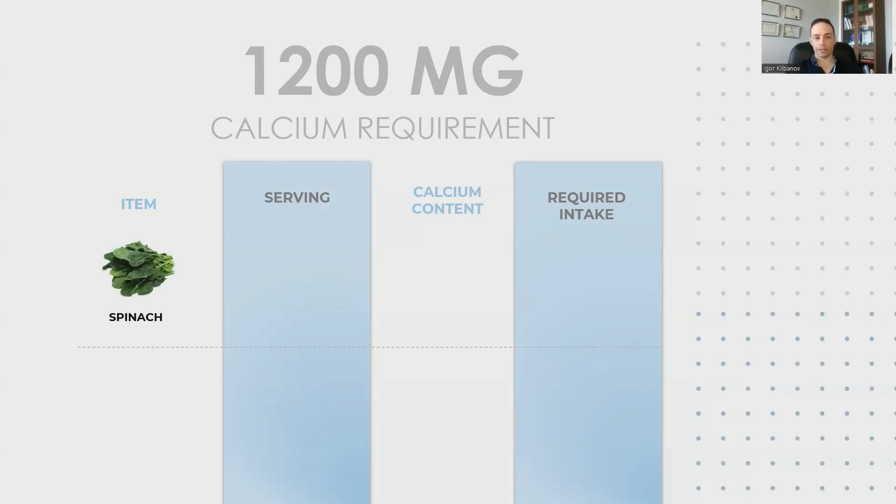One serving of spinach is considered a cup, but a cup of spinach only has 30 grams. It's not 100 grams. And the calcium content in one cup of spinach is about 20 milligrams. And you would need 60 cups of spinach to get your 1200 milligram of calcium per day requirement. So not that good.